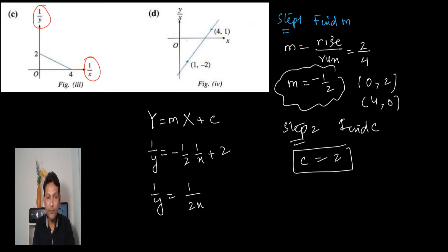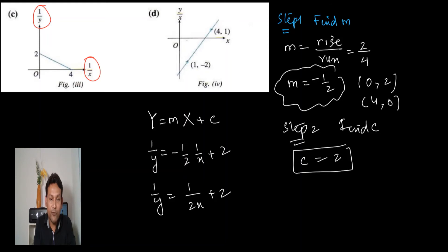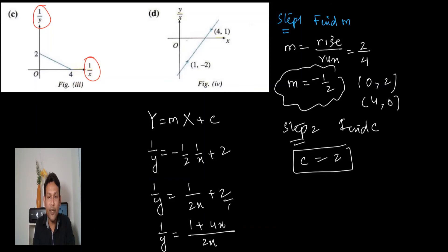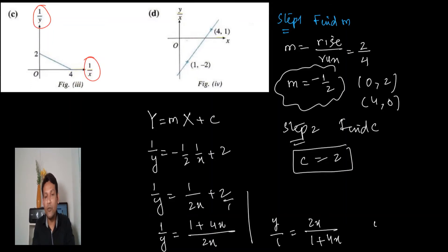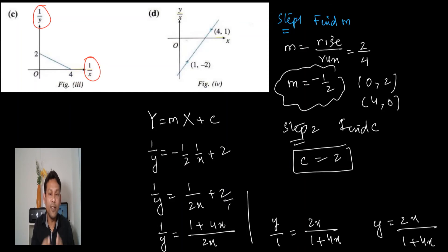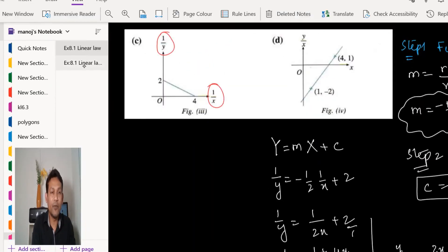The question requires writing y in terms of x. Using cross multiplication on 1/y equals minus 1/(2x) plus 2: the right-hand side becomes (1 plus 4x) / (2x). When you take the reciprocal to make y the subject, y equals 2x / (1 plus 4x). This is the method for converting the linear law equation back to y in terms of x.